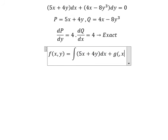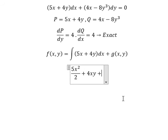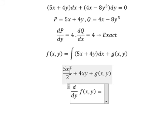The integration of 5x gives us 5x²/2, and this one gives us 4xy. So we do the first derivative of the function with respect to y for both sides. For this term we get zero, and this term gives us 4x.